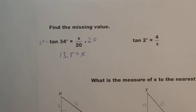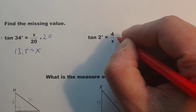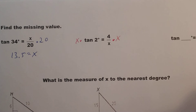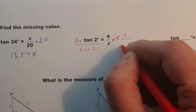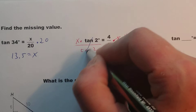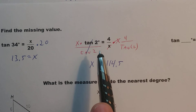For this next one, it's a little trickier because the x is in the denominator. First we multiply both sides by x, then divide by the tangent of 2 — those cancel. So I get 4 divided by the tangent of 2, and that's about 114.5. This means at a two-degree angle, the two legs forming it have a ratio of about 114.5.